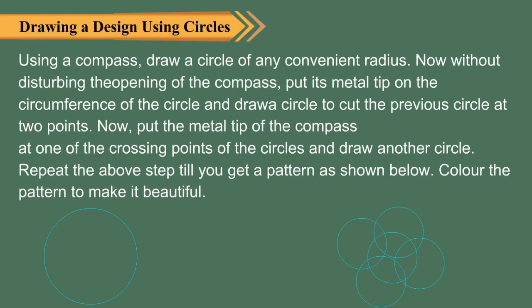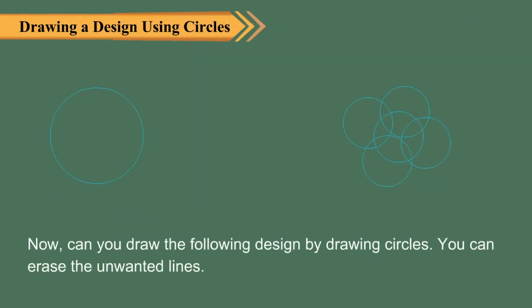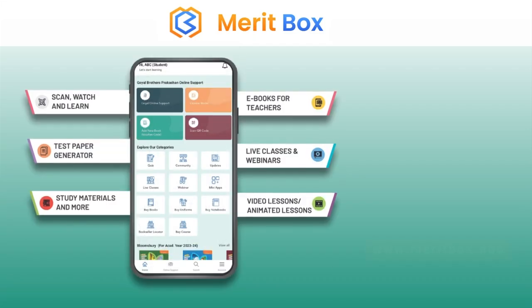Drawing a design using circles: using a compass, draw a circle of any convenient radius. Without disturbing the opening of the compass, put its metal tip on the circumference of the circle and draw a circle to cut the previous circle at two points. Put the metal tip at one of the crossing points and draw another circle. Repeat this step until you get a pattern. Color the pattern to make it beautiful. You can also erase unwanted lines.